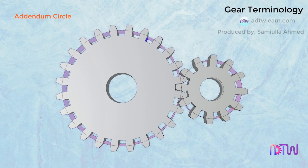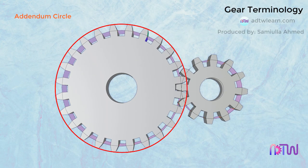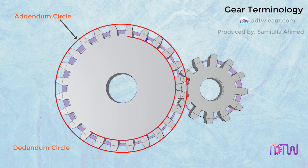Addendum Circle. The circle drawn through the top of the teeth, concentric with the pitch circle, is called the addendum circle. Dedendum Circle. The circle drawn through the bottom of the teeth is called the dedendum circle. It is also called the root circle.